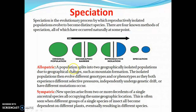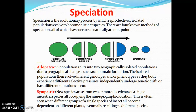Allopatric speciation is when a population is split into two geographically isolated populations. 'Allo' means different geographical area and 'sym' means same geographical area. Due to geographical changes such as mountain formation, the isolated populations then evolve different genotypes or phenotypes as they both experience different selective pressures, independently undergo genetic drift, and have mutations occur. In short, allopatric speciation is speciation which occurs in two different geographical areas, isolated by a geographical barrier.